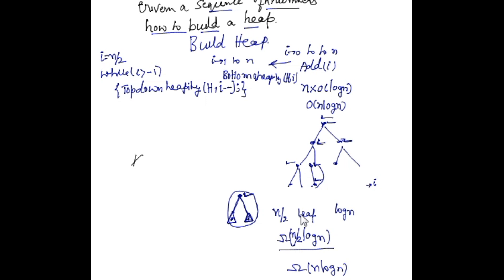What we need to notice is that if a node is at height i, when you call the top-down heapify function the number of comparisons done by this algorithm is exactly equal to i. If the node is at height i, when I call top-down heapify the number of comparisons is at most i — equal to the height of the subtree. So for leaf nodes I do nothing; at non-leaf nodes of height 1, the number of comparisons is 1. In general, if you pick a node at height h, when you call top-down heapify the number of operations is exactly equal to h.